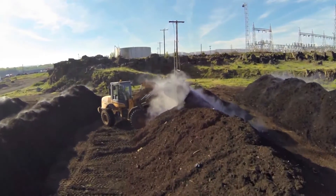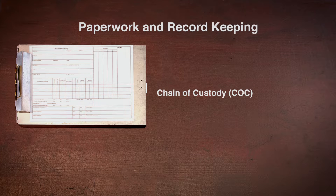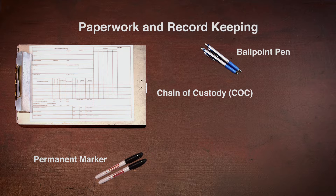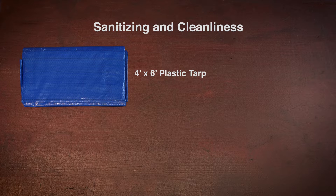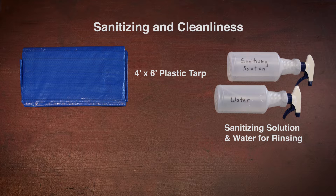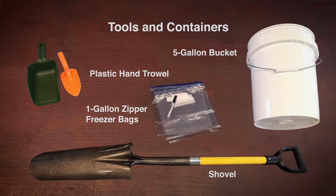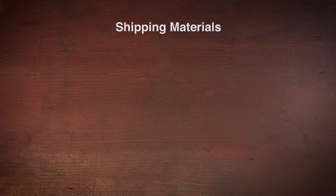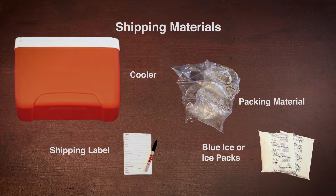After determining your sampling dates based on your chosen frequency of monitoring, gather your sampling equipment, including: paperwork and record keeping, chain of custody, permanent marker, ballpoint pen, logbook; for sanitizing and cleanliness — a 4x6 or larger plastic tarp, a spray bottle filled with a dilute solution of Alkinox or similar non-phosphorous cleaner for sanitation, and nitrile gloves; tools and containers — shovel, plastic hand trowel, 5-gallon bucket, 1-gallon Ziploc bags; and shipping materials — shipping label, cooler for shipping, blue ice or frozen ice packs, packing material, and adhesive tape.